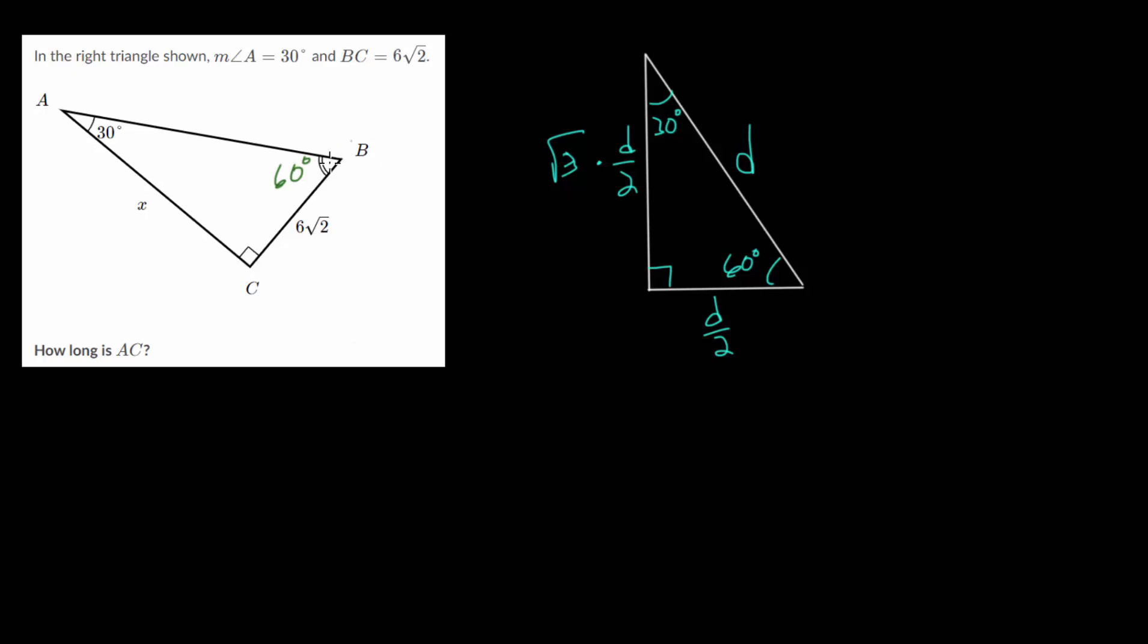And we're also told that the short side is 6 times by the square root of 2. So since this is the shortest side, it's the one opposite the smallest angle, we know this is half the hypotenuse. So the hypotenuse would be 12 times the square root of 2.